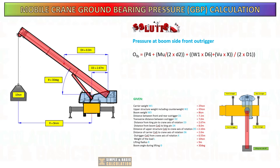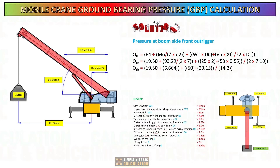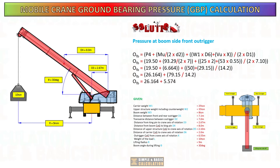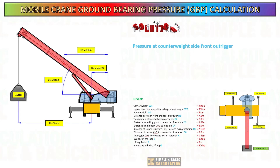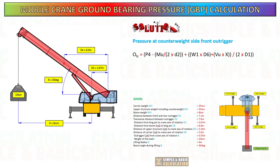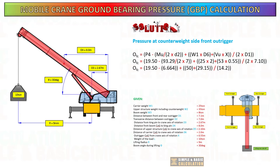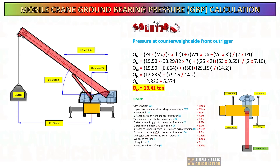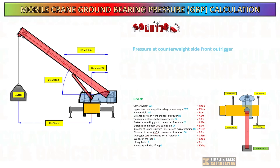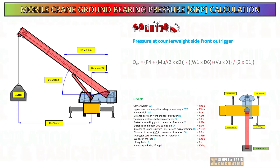Now, start to calculate the front outrigger pressure at the boom side of the mobile crane as shown in the slide. Next, start to calculate the front outrigger pressure at the counterweight side of the mobile crane. Next, start to calculate the rear outrigger pressure at the boom side of the mobile crane as shown.